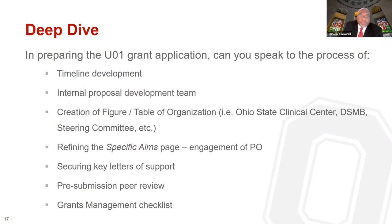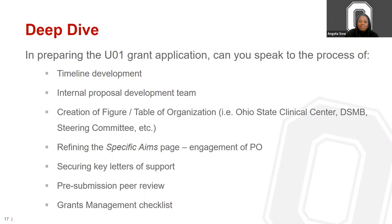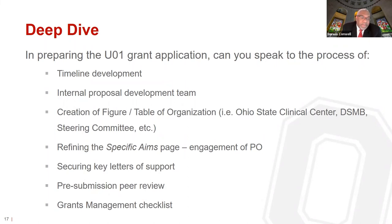A question about taking a deep dive into preparing the U01 grant application: can you speak to the process of timeline development, proposal development, figures and tables, refining the specific aims page, securing key letters of support, pre-submission peer review, and the grants checklist? Dr. Conwell noted this leads perfectly to Diana Burdett, who has been tremendously helpful on all his U01s and R01s — particularly with the timeline. Diana said: contact the GMO as soon as you know you're planning to submit a U01. Include the grants office in every step of the way.